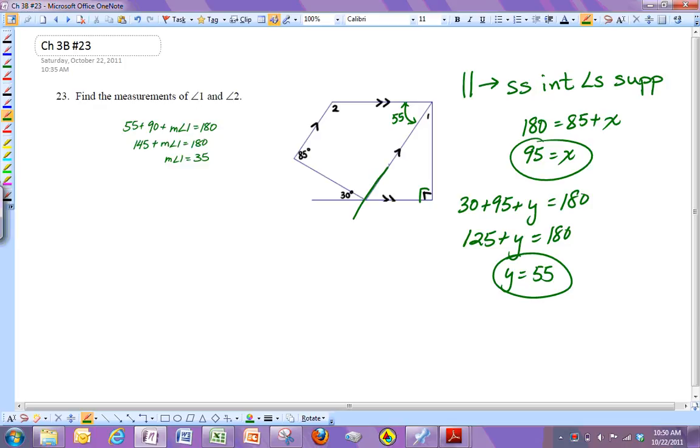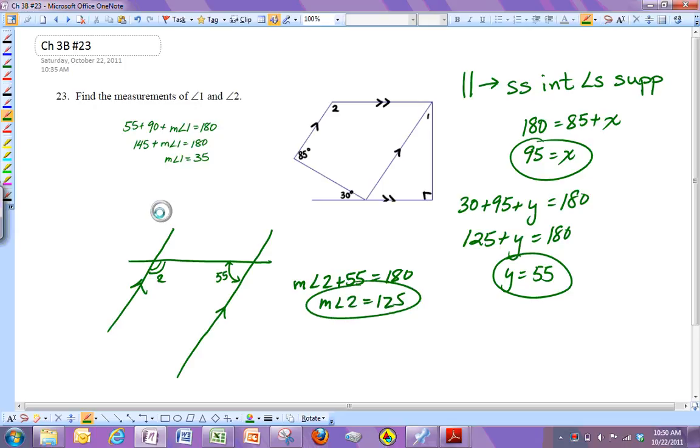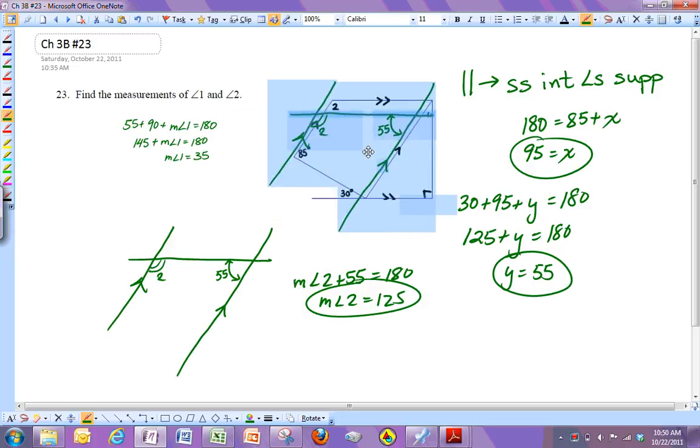Now if you look back here, here's one line. Here's another line. Here's a transversal with these parallels. So just like with the 85 and the 95 that we did at the beginning, this 55 and this angle here are also same side interior angles. So they should be supplementary too. So 55 plus angle two here have to be 180. So this is 125. Right there.